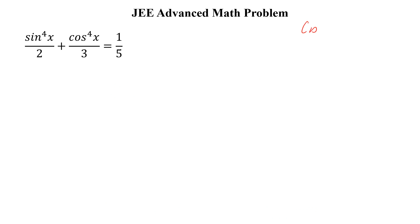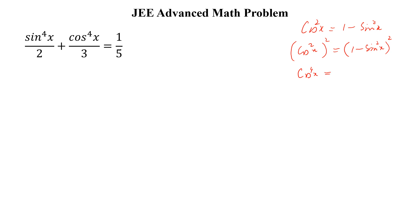We know that cosine square x is equal to 1 minus sine square x. Taking the square on both sides, we get cosine to the power 4x is equal to 1 plus sine to the power 4x minus 2 sine square x.